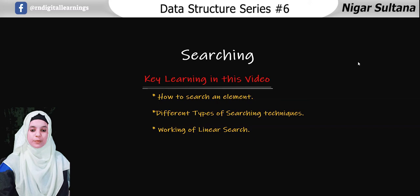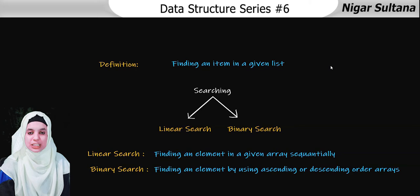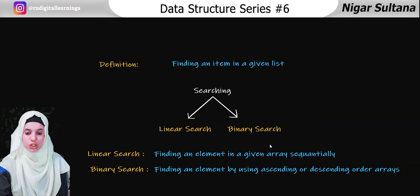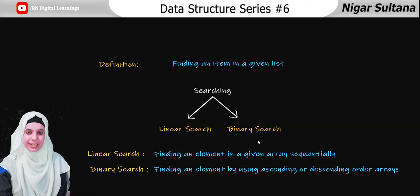What is searching? Finding an item in a given list is searching. We have two techniques: linear search and binary search. When we are finding an item in a linear way, that is linear search, and when we are finding an item in an ordered list, that is binary search.